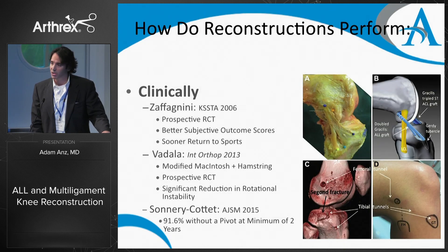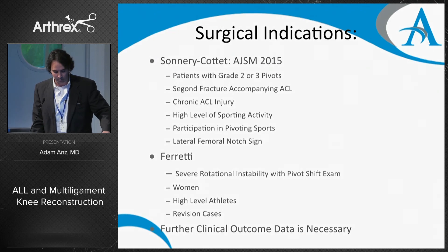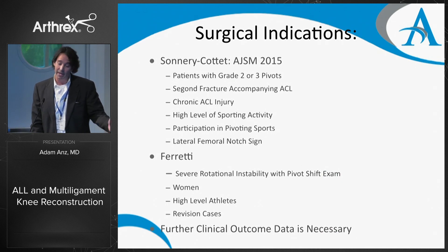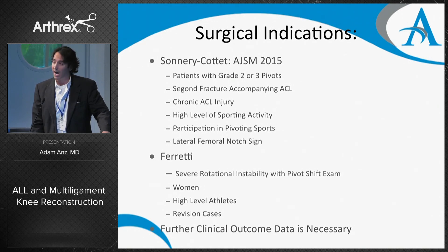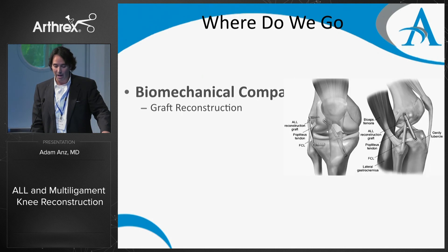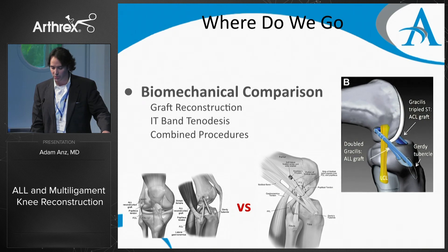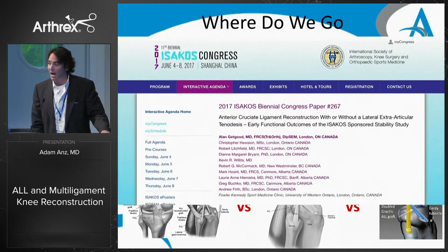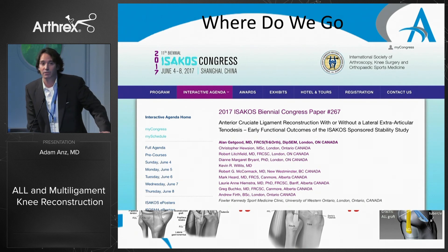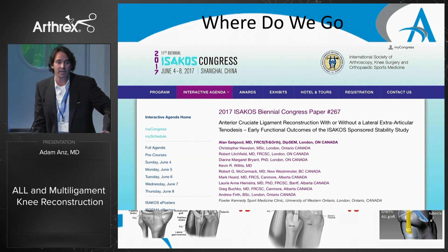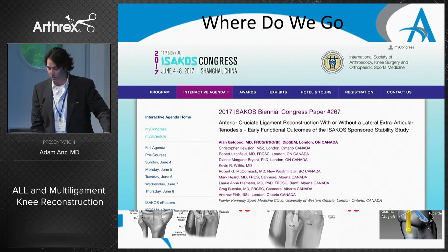Clinically, there are three studies in the literature and they've all shown good return to play in terms of outcomes, with comparative studies suggesting this is the right direction. Surgical indications, depending on who you ask: Sonnery-Cottet recommends it for anybody with a grade 2 or grade 3 pivot shift, when there's a Segond fracture, any chronic ACL injury, or high-level athletes. Our next steps are to compare these procedures biomechanically and keep an eye on Al Getgood's study showing better outcomes with the addition of lateral tenodesis to ACL reconstructions.